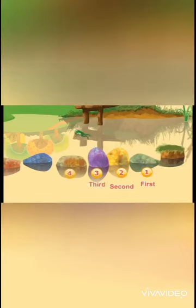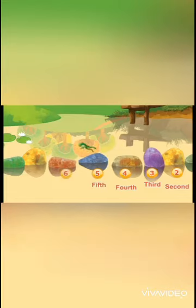One — this stone is the first from the right. Two — we're on the second stone from the right. Three — now we reach the third stone from the right. Four — this is the fourth stone. Great job, you count really well! Five — this is the fifth stone.